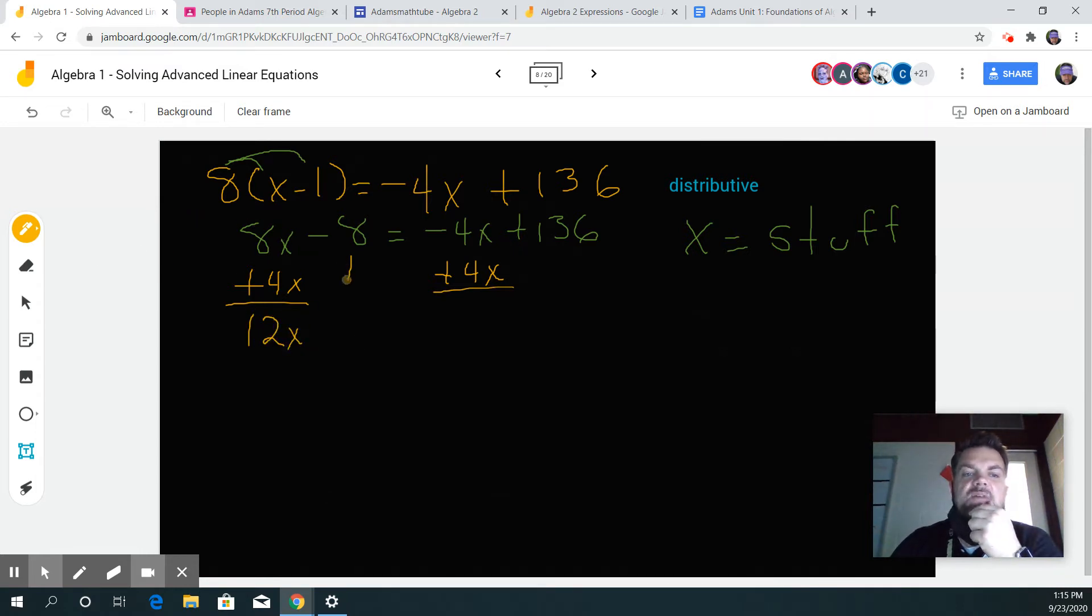Now the rest of this stuff just comes down, so my negative 8 comes down. Whoops, one too many lines. Negative 8 just comes down, and then negative 4x plus 4x is just 0. 0 plus 136 is 136.